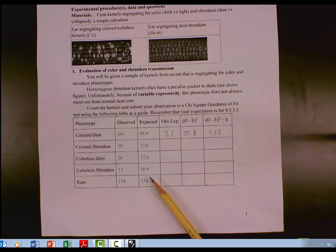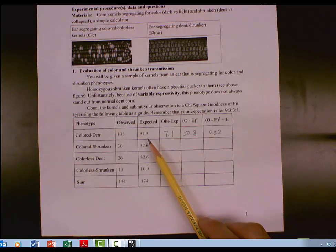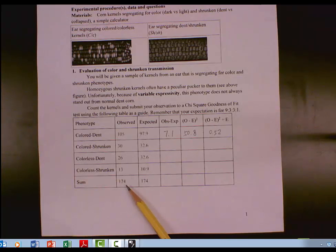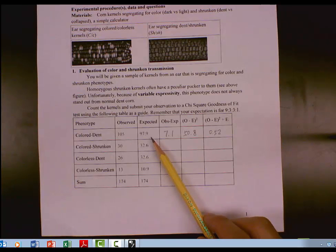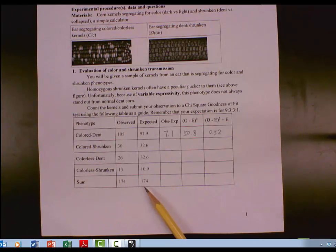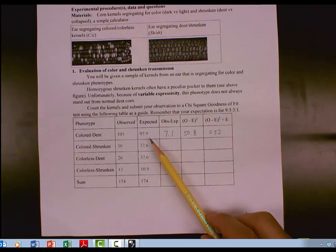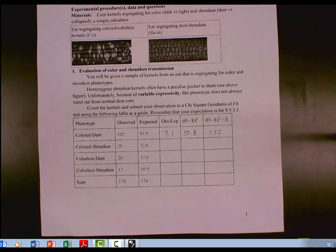I already calculate the expected kernel number, which is the total times the corresponding fraction. Let's say this colored kernel dent is 9 out of 16. 174 times 9 over 16. The result is 97.7. Then the rest of expected numbers calculate in the same way.